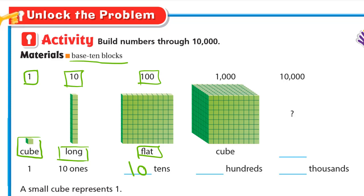So the cube is 1, 10 ones and its shape is long. 10 of these longs make a flat, so 10 tens is 100. Then 10 flats make a cube. The flat is 100, so 10 hundreds is 1,000.